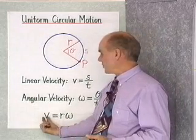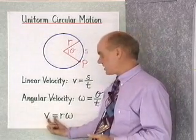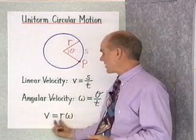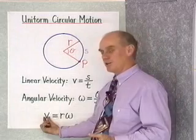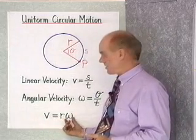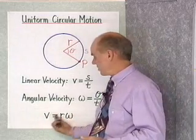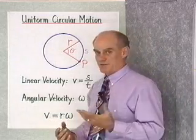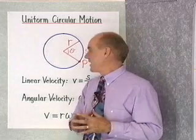The relationship between linear velocity and angular velocity is that the linear velocity equals the radius times the angular velocity. If you want to see the derivation of this, you have to look in the book.